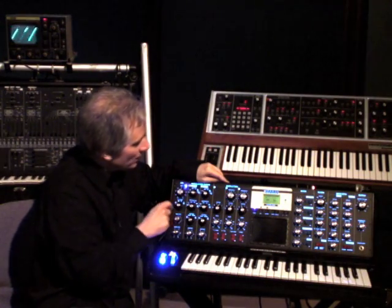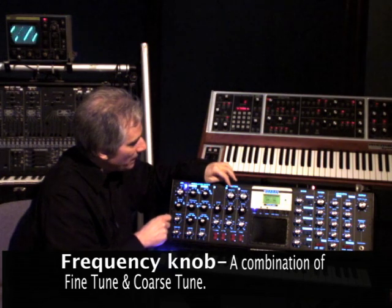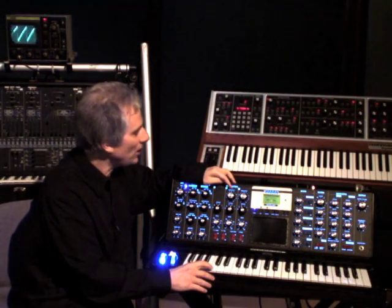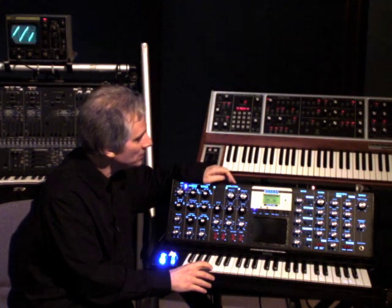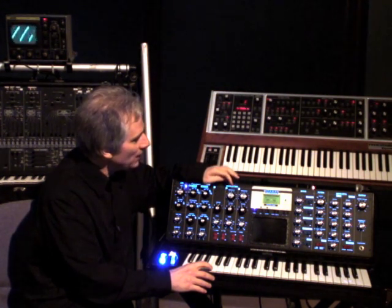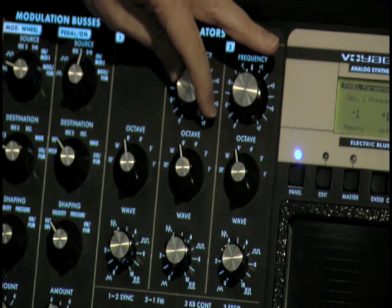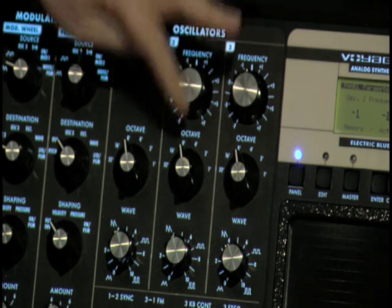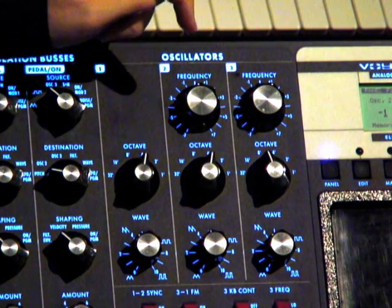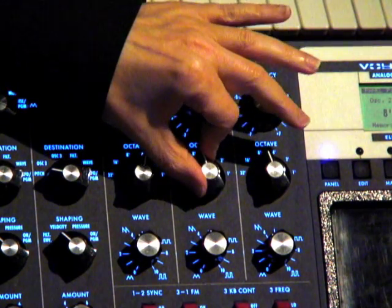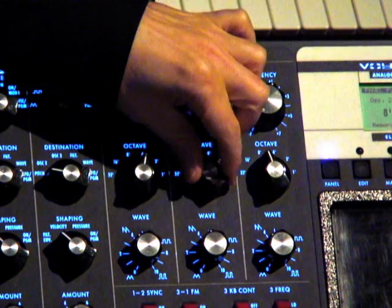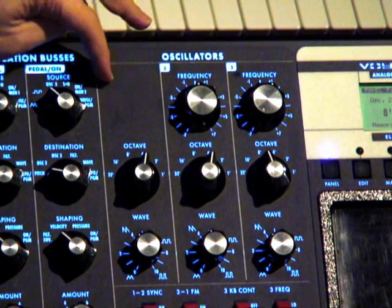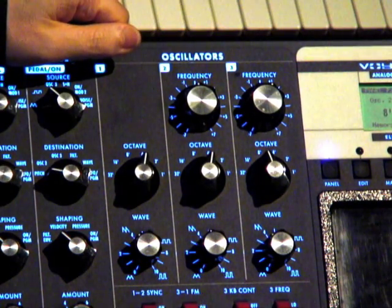Now let's take a look at the second oscillator. The knob titled Frequency is somewhat a combination of fine-tune and coarse-tune. Notice that if I move the knob, we will smoothly change pitch up and then back down, up to about a perfect fifth high. Then notice below that, the octave switch will allow us to quickly change by octave. We can do the same for oscillator three. For oscillator one, we can only change the octave.